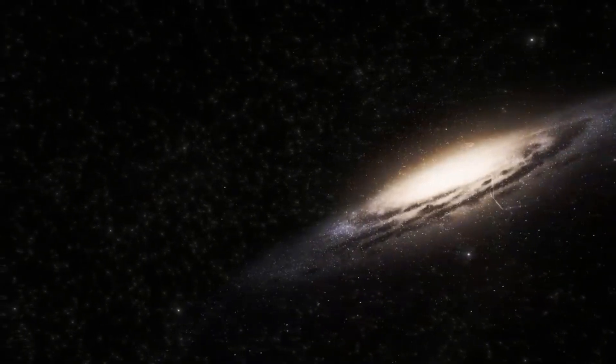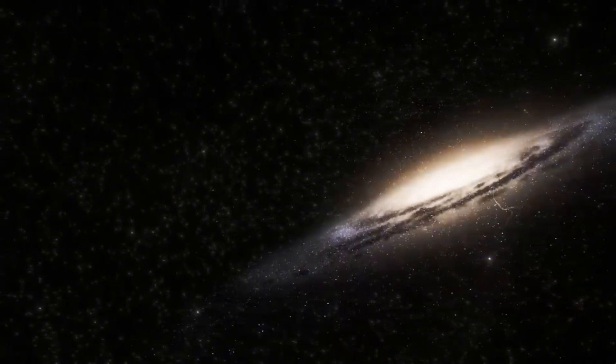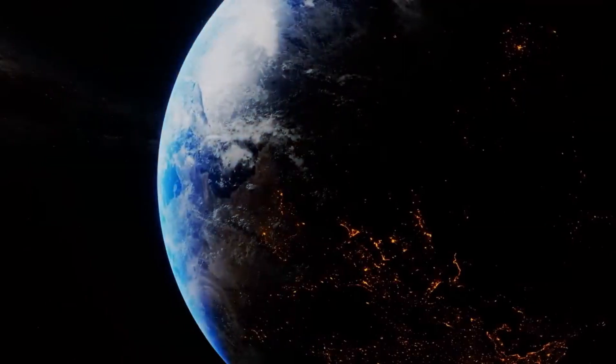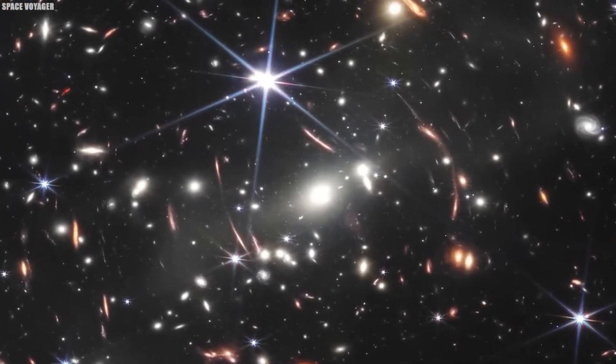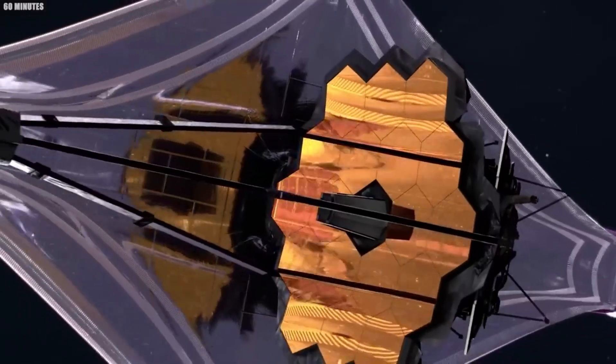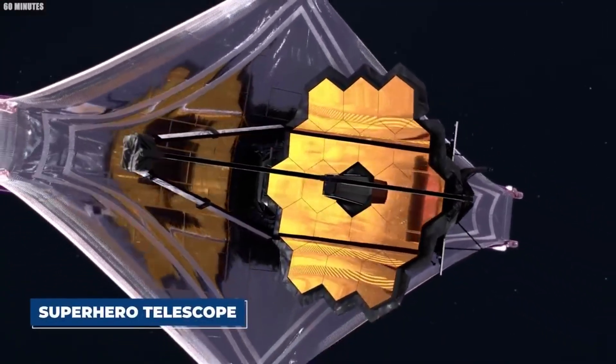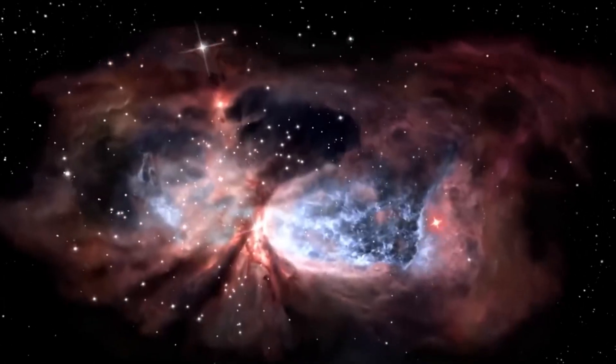Over hundreds of millions of years, the galaxies will transform beyond recognition. The initial spiral structures will give way to a large elliptical galaxy, a monument to their union, Milkdromeda. This is just a glimpse into the fascinating dynamics of our ever-changing universe.